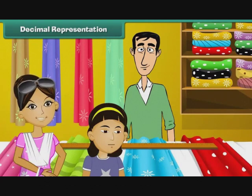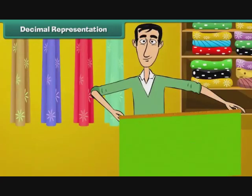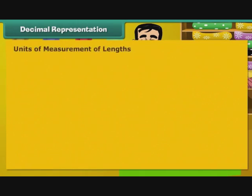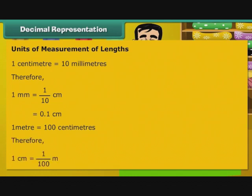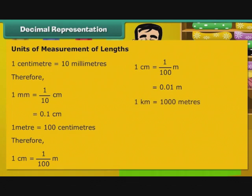Bela accompanies her mother to a saree shop. She asks the shopkeeper the actual length of a saree. The shopkeeper measures it in front of her as 550 cm. Bela wants to know if 550 cm can be expressed as metres. To answer Bela's question, let us understand the relationship between the different measures of length. 1 cm is equal to 10 mm, therefore 1 mm is equal to 1 by 10 cm, that is 0.1 cm. 1 m is equal to 100 cm, therefore 1 cm is equal to 1 by 100 m, that is 0.01 m. 1 km is equal to 1000 m, therefore 1 m is equal to 1 by 1000 km, that is 0.001 km.